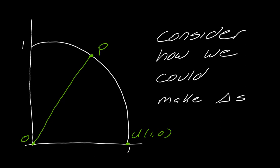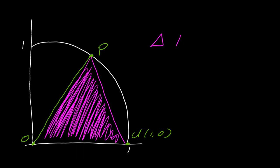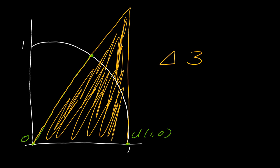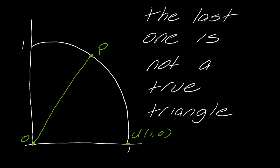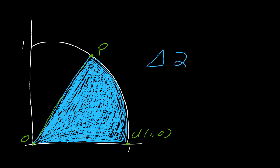There are several ways you can create triangles using this line as a guiding point, but for this proof I'm just going to show you the three relevant shapes we need. The first one we'll make by connecting P to U — we'll call this Triangle 1. The next one is a big triangle where we clear right through point P to make a giant triangle — we'll call this Triangle 3. And then the last one is not a true triangle; it's really more like a wedge of the circle. I'll call it Triangle 2, just to keep the naming consistent.